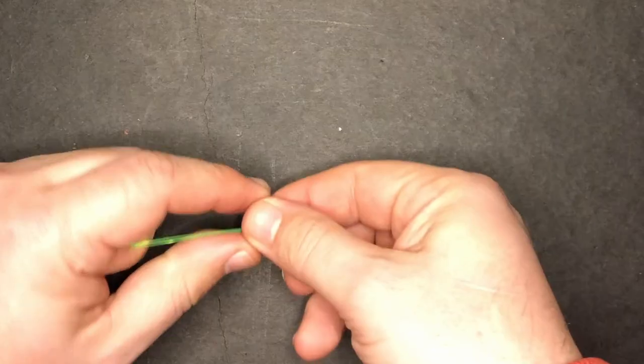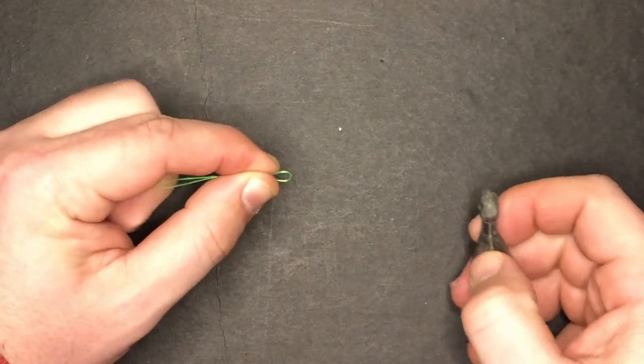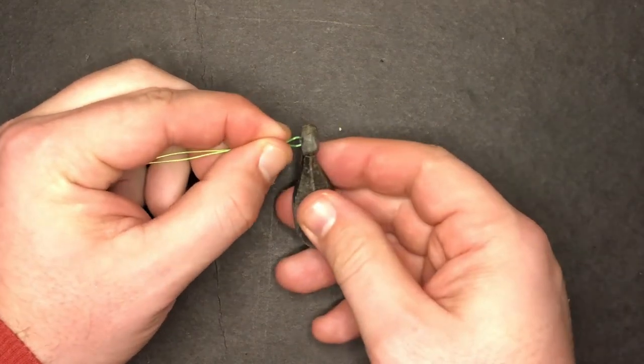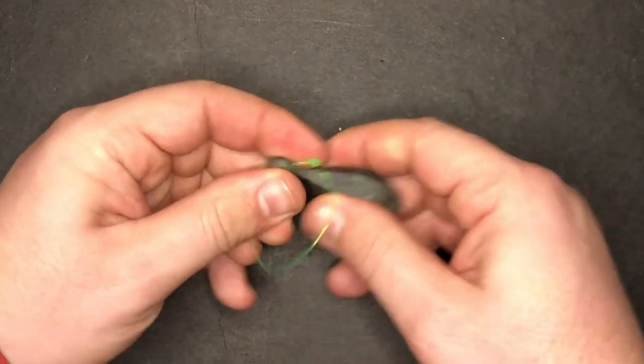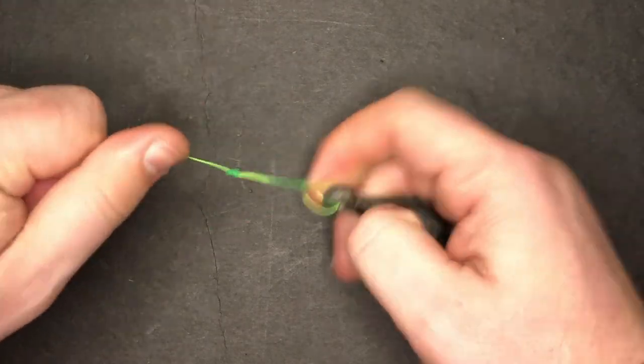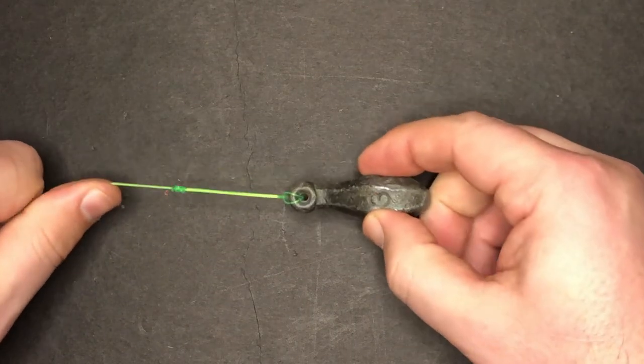Once the main line's tied on, I'm going to move down to the sinker. I'm going to pull out that surgeon's loop, thread it through the eye of the sinker, pull it all the way through and wrap it around the entire body. Bring it up past the eye and then pull the line tight. Bam, we got our sinker on there.